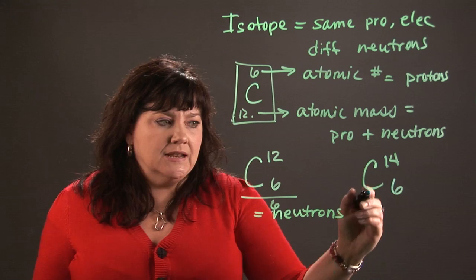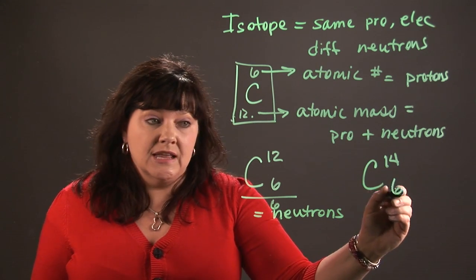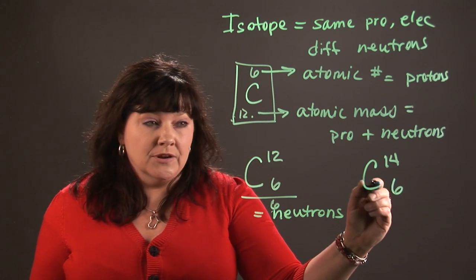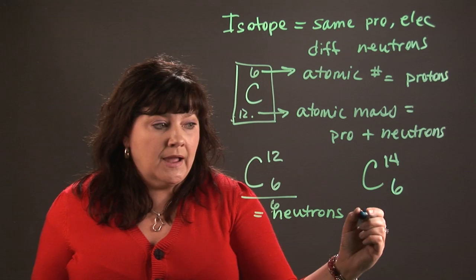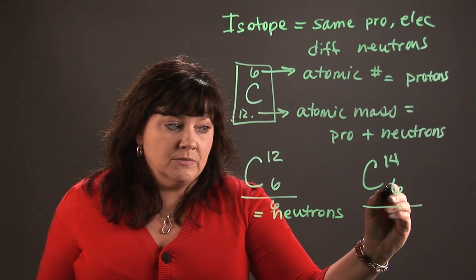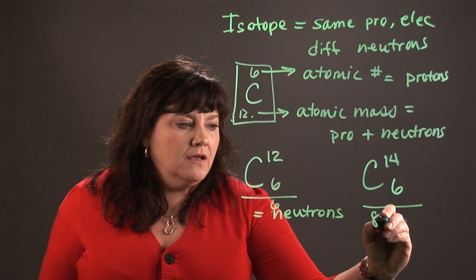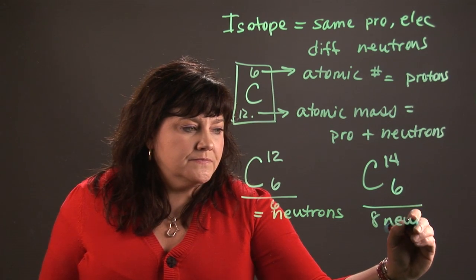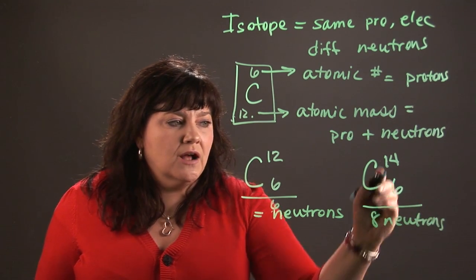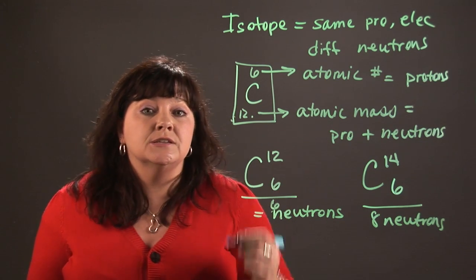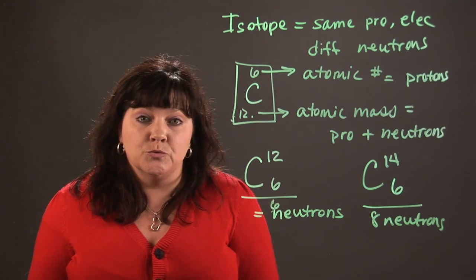It has a mass of 14, but its atomic number is going to stay the same. The atomic number is never going to change, but the atomic mass might. I'm going to do the same process. I'm going to subtract six from 14 and this time I'm going to get eight. So that means that there are eight neutrons in carbon-14, whereas there are only six neutrons in carbon-12.